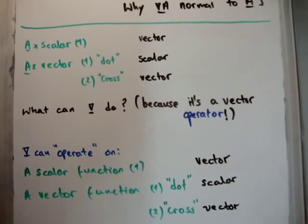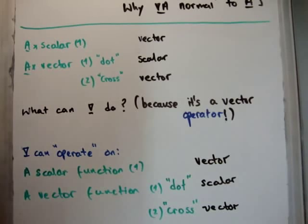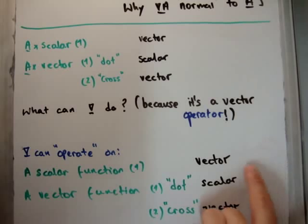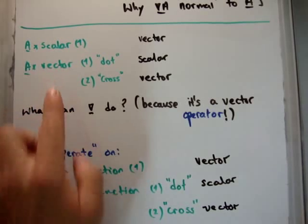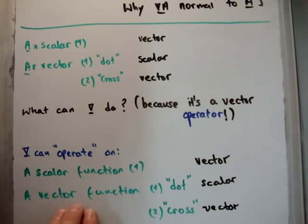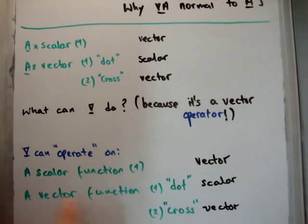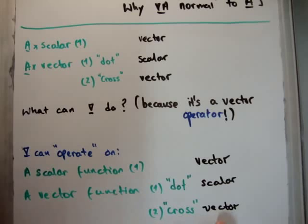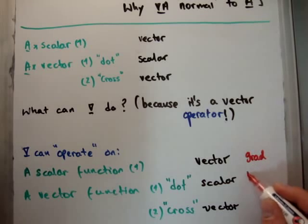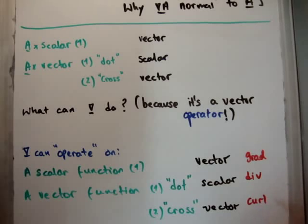The nabla operator has three possibilities. It can operate on a scalar function and give back a vector — there's only one way to do that. And there are two ways, analogous to before, that the nabla can operate on a vector function: by the dot product or by the cross product. If you use the dot product on a vector function, you get back a scalar. If you use the cross product, you get back a vector. These operations are called the gradient, the divergence, and the curl respectively.